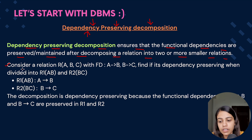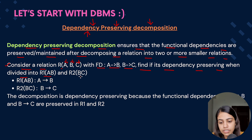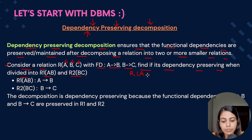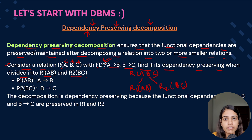Consider a relation R having attributes A, B, and C with functional dependencies A→B and B→C. Find its dependency preserving decomposition when it's divided into relation R1 having attributes A and B, and relation R2 having attributes B and C. We have to see whether the functional dependency present before the decomposition is preserved or maintained after the decomposition.